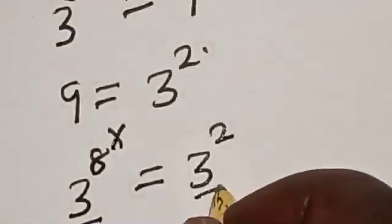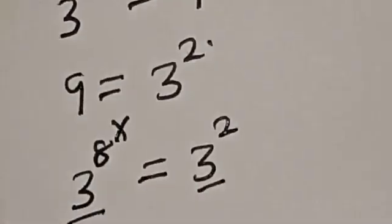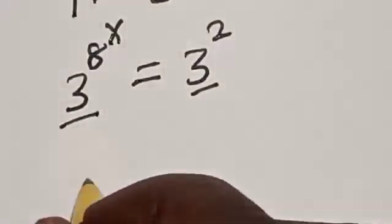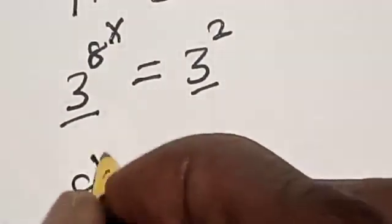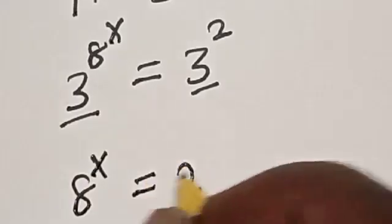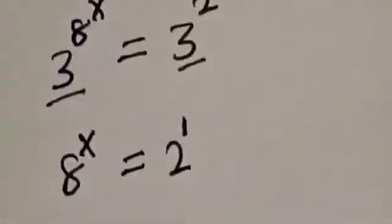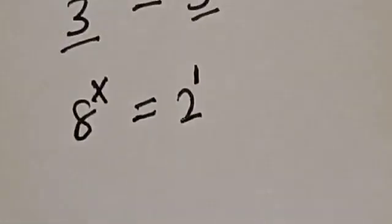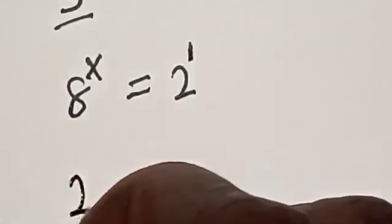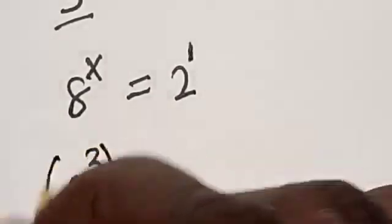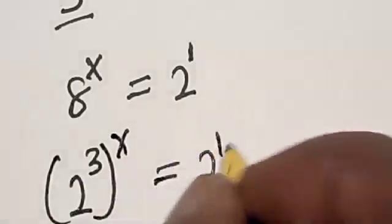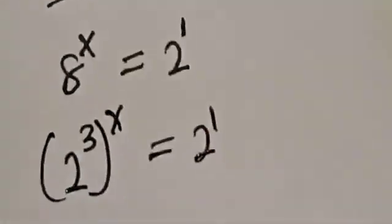They have the same base 3, so we are left with the exponent: 8 raised to power x is equal to 2. This is the same as 2 raised to power 1. Then 8 raised to power x can be written as 2 raised to power 3 raised to power x, which is equal to 2 raised to power 1.